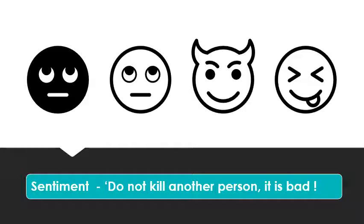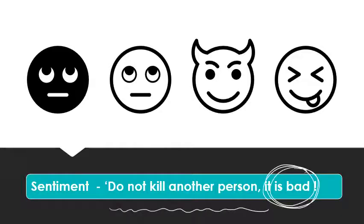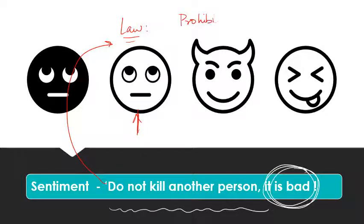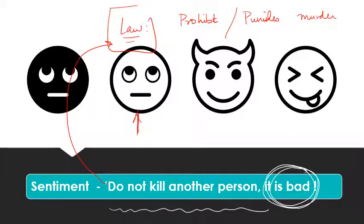Let me give a few examples of how sentiment leads to law. We have a sentiment that you should not kill another person — it is bad. So we have a law that prohibits — or rather punishes — murder. There's a sentiment, and the sentiment leads to the enactment of a law.